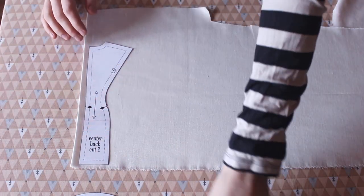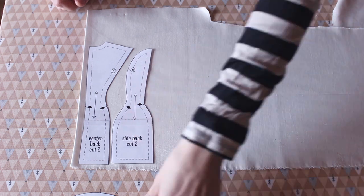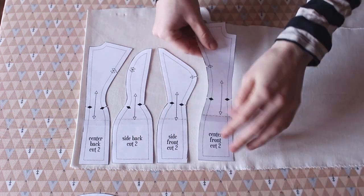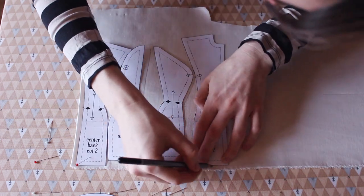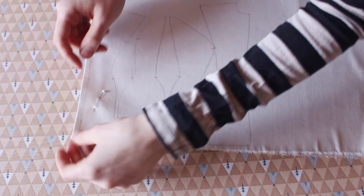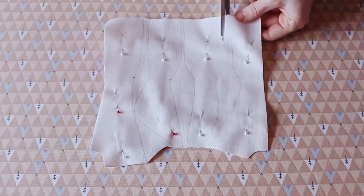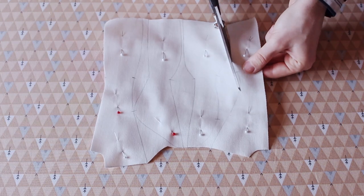Fold your fabric right sides together and trace the front, side front, side back, and back pieces. Don't forget to mark notches at the side and bust level. Then pin both layers together and carefully cut the pieces along the lines.